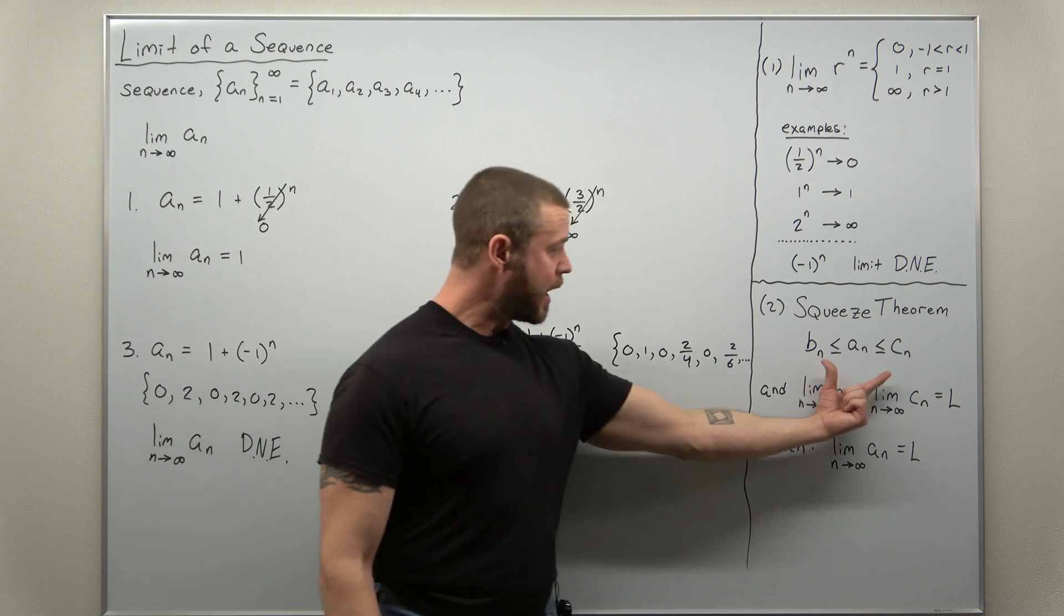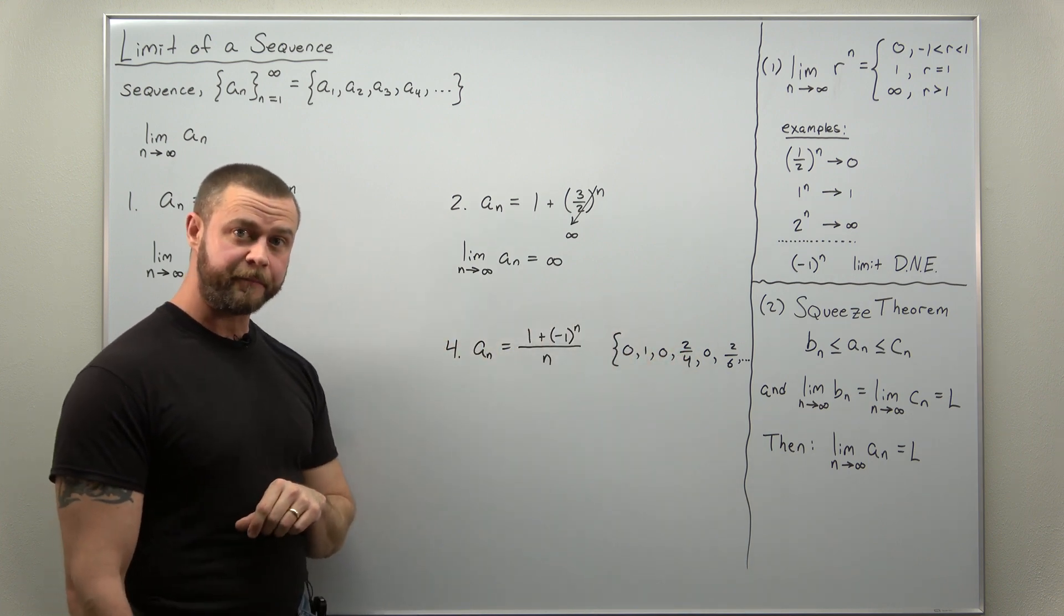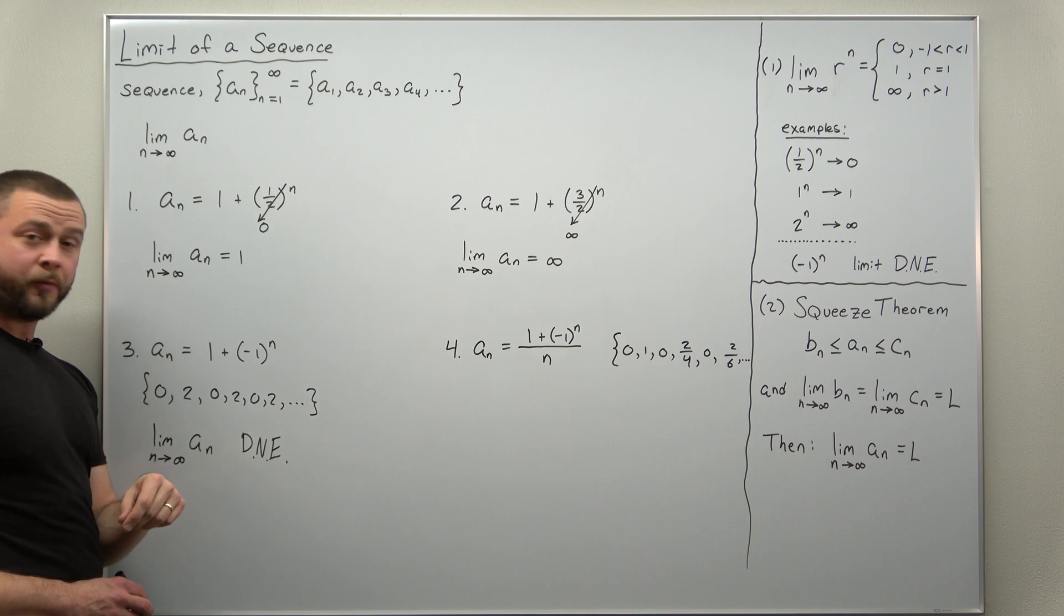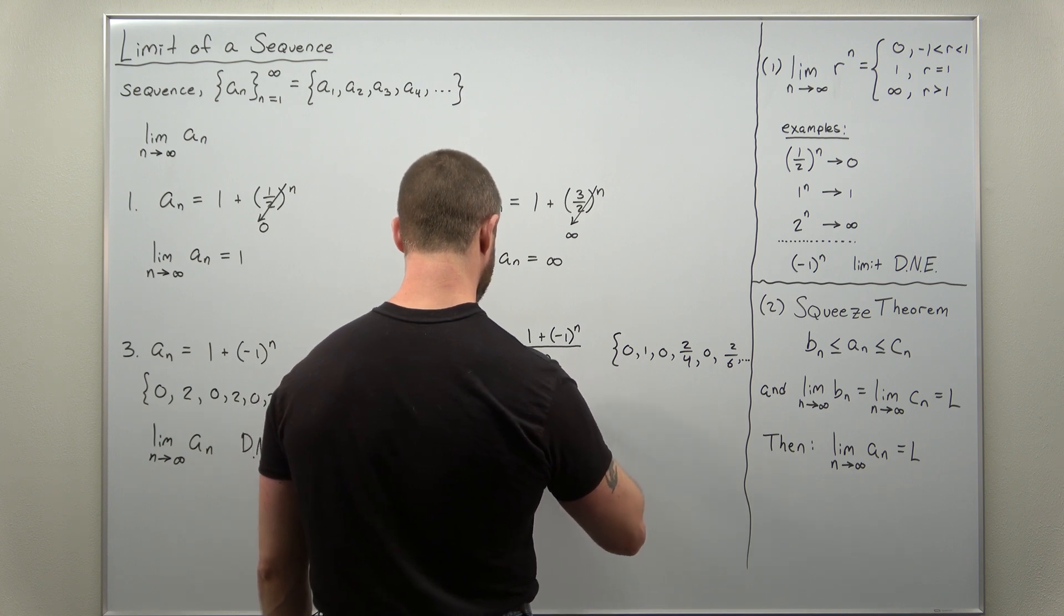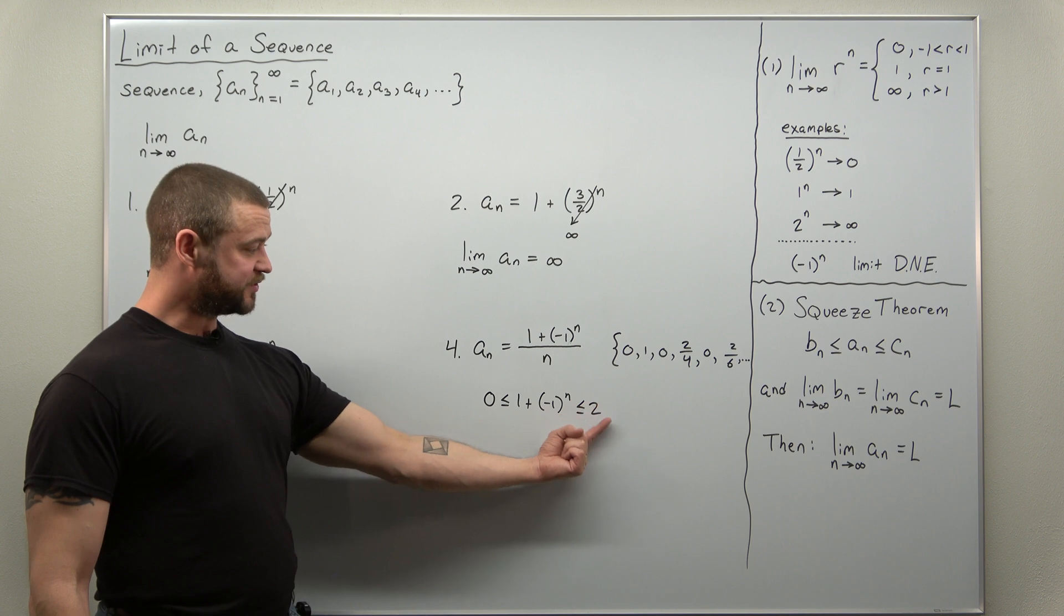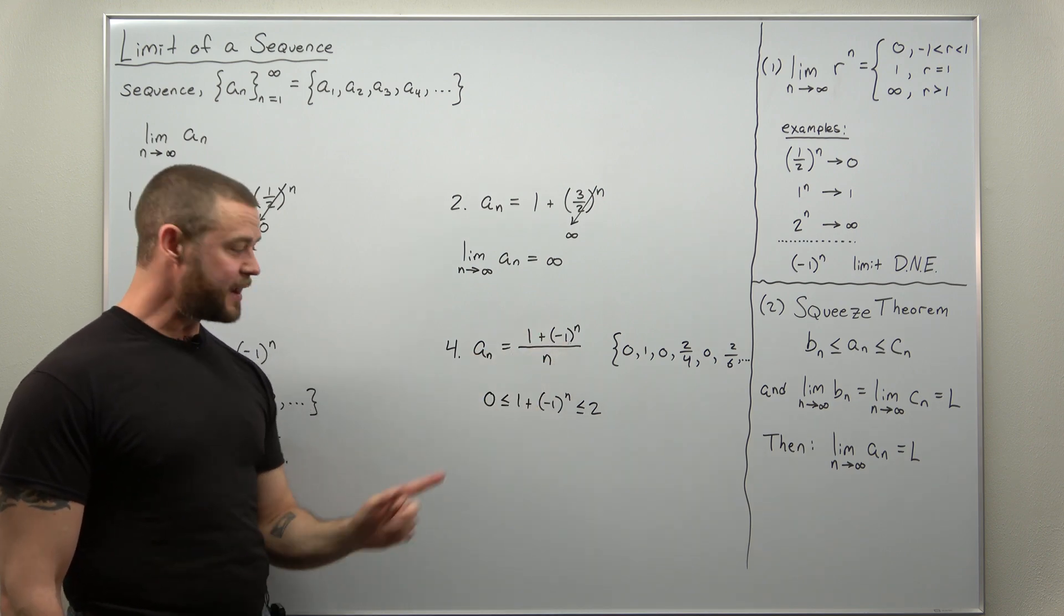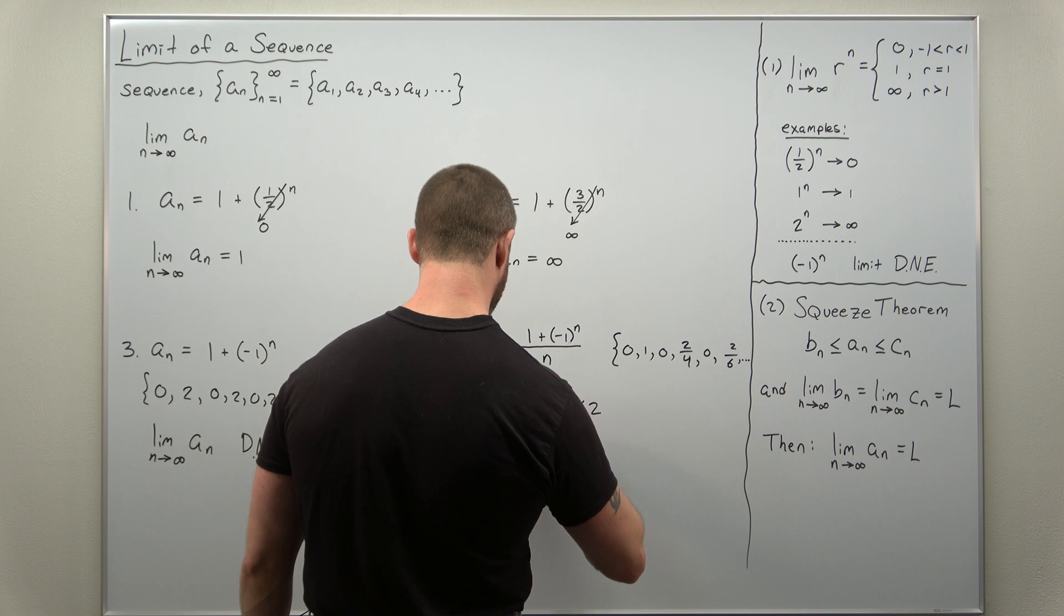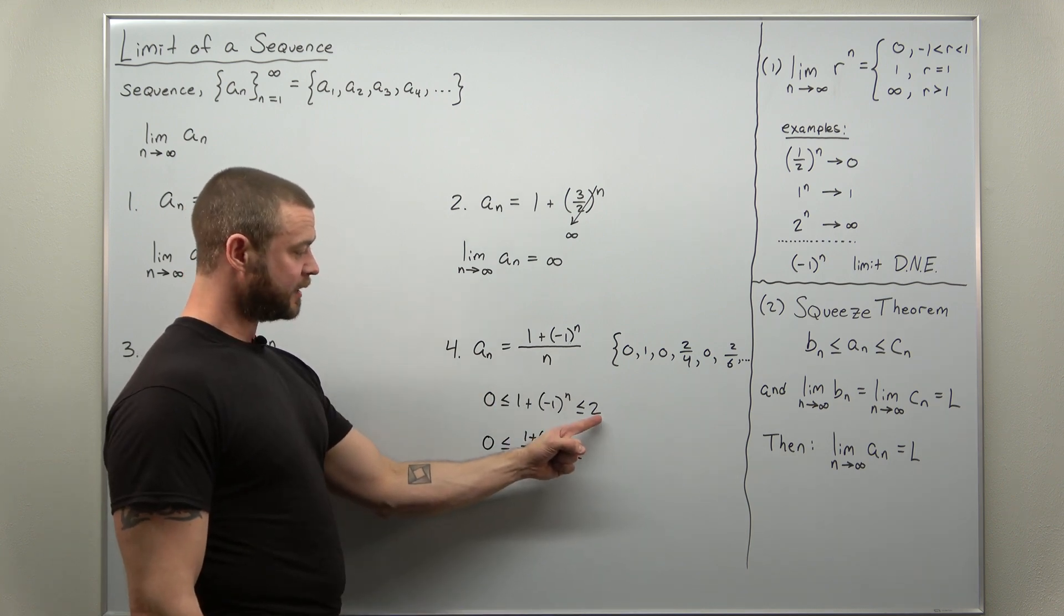So let's build up the inequality here. We want to build up from a sub n. We want to find a term that's bigger and one that's smaller. So let's start with the observation that the numerator one plus negative one to the n is either zero or two. So what we can say here to start is that the numerator one plus negative one to the n it's between zero and two. Now to make the middle here look like our term, I'm going to want to divide everything by n. So divide zero by n, you'll just get zero, divide the middle by n, that gives us our term for the sequence a sub n, and now divide two by n.